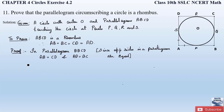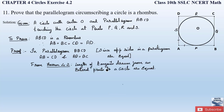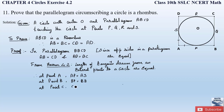Now from theorem 4.2, the length of tangents drawn from an external point to a circle are equal. Applying this: at point A, AP = AS (equation 1); at point B, BP = BQ (equation 2); at point C, CR = CQ (equation 3); at point D, DR = DS (equation 4). Let us add all four equations.